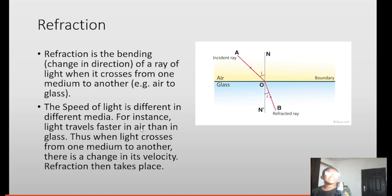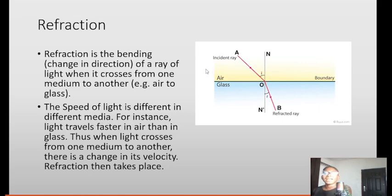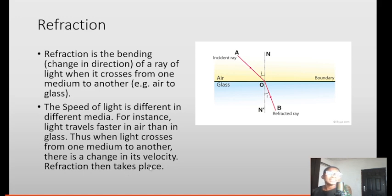The speed of light is different in different media. For instance, light travels faster in air than in glass. You can remember when we were talking about sound waves — we said sound travels faster in solid than in air. But the reverse is the case for light: light travels faster in air than in other media because of their densities. So when light crosses from one medium to another there is a change in its velocity, and refraction takes place.